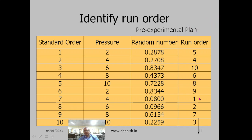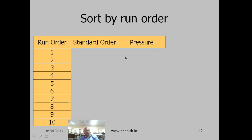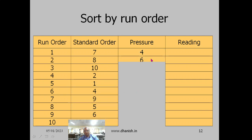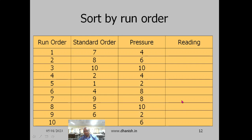When taking observations, first take the observation corresponding to run order one. For convenience, we resort in terms of the run order to make another table — that is the observation table. The run orders vary from 1 to 10 and the corresponding input pressure values are nominal values. The corresponding readings are noted in this column. This table is called the experimental plan.